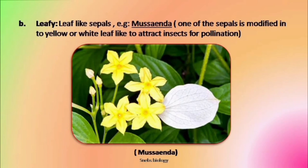Next is where the sepals become leafy — a leafy structure is seen. The example of this is Mussaenda. In this flower, the flower is normal but one of these sepals becomes long and leafy. One sepal is modified into this leafy structure, and it is normally white in color, but because it appears leaf-like we call this modification 'leafy'.